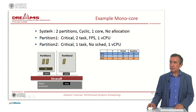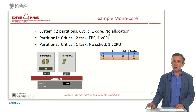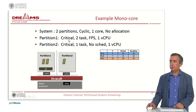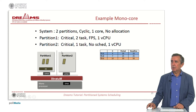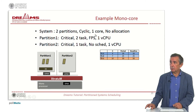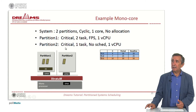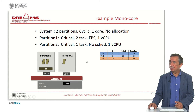For example, consider a system with two partitions applying a cyclic policy on one core. Partition one has two tasks using a fixed-priority schedule with one virtual CPU. Partition two has no operating system and uses a single task. These are the parameters of the tasks in partition one and partition two.